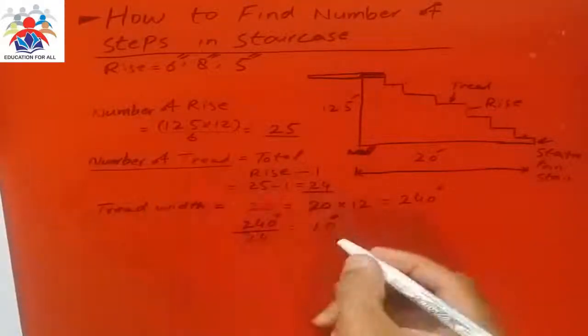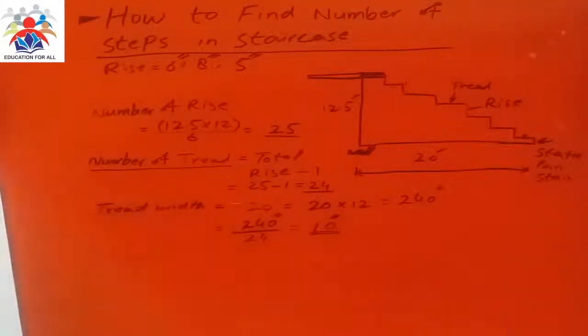So now in conclusion, we have number of rise 25, number of tread 24. So how much number of stairs would be? The number of steps would be: if you just look at the diagram, 25. That's our final answer.